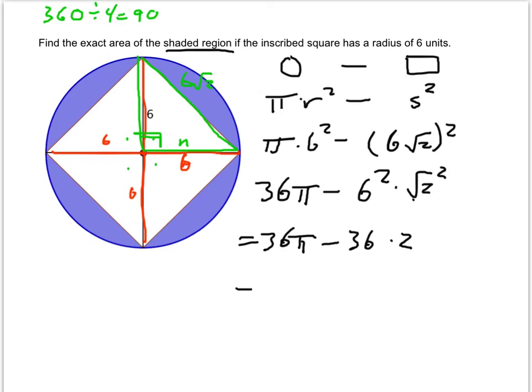And so, the exact area, because it asks us for the exact area of the shaded region, would be 36 pi, minus 36 times 2, which is 72 square units.